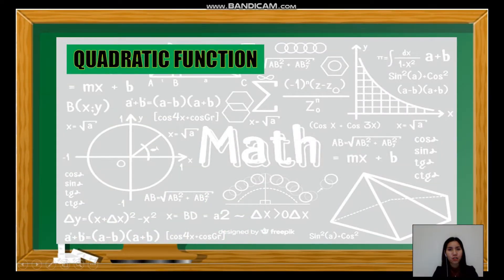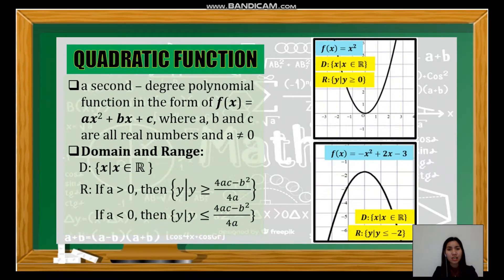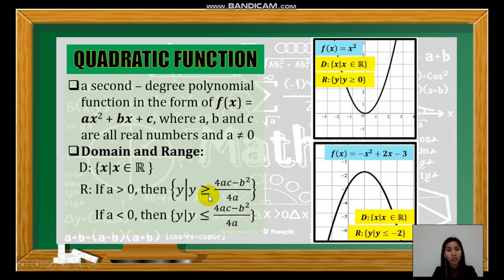The next type of function is the quadratic function. It is a second-degree polynomial function in the form f(x) = ax² + bx + c, where a, b, and c are all real numbers and a ≠ 0. The domain of any quadratic function is the set of real numbers. For the range: if a > 0, the range is y ≥ (4ac − b²) / 4a; while when a < 0, we use less than or equal to.